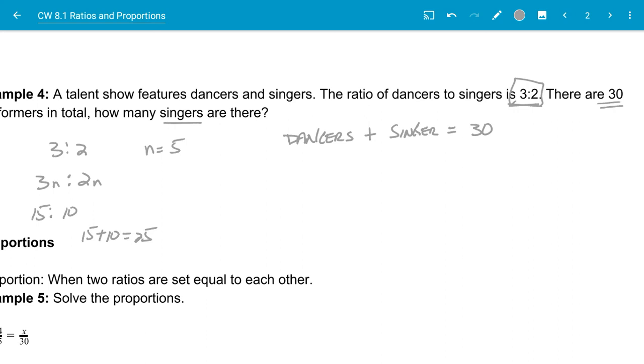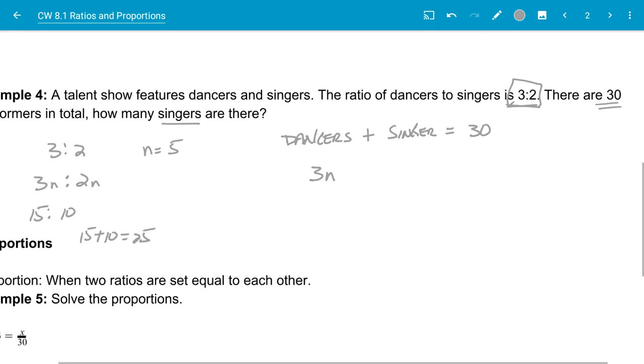But what we can do is use this general form: 3n, the number of dancers multiplied by the common factor, plus 2n, the number of singers multiplied by the common factor, equals 30. So I solve for n: 3n plus 2n is 5n equals 30, so dividing both sides by 5, n equals 6.